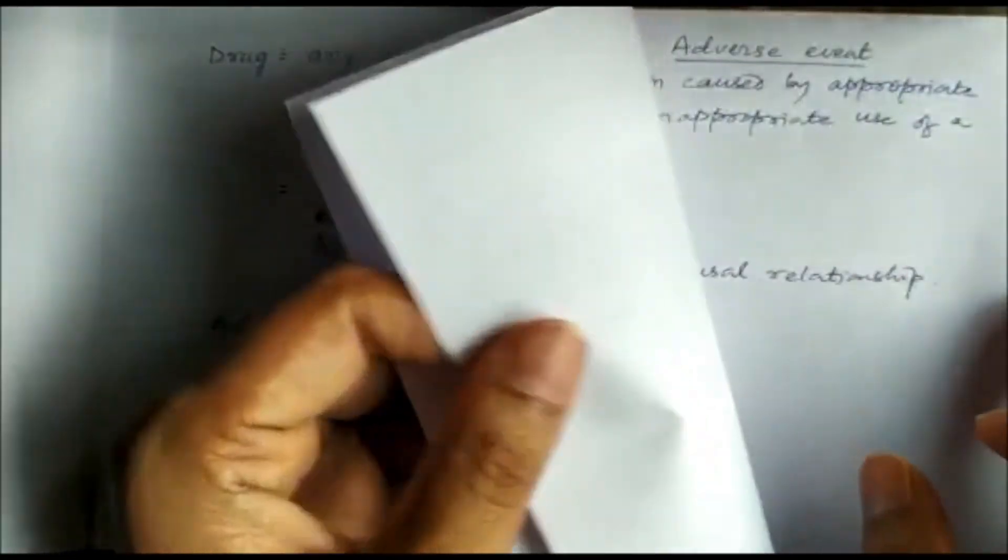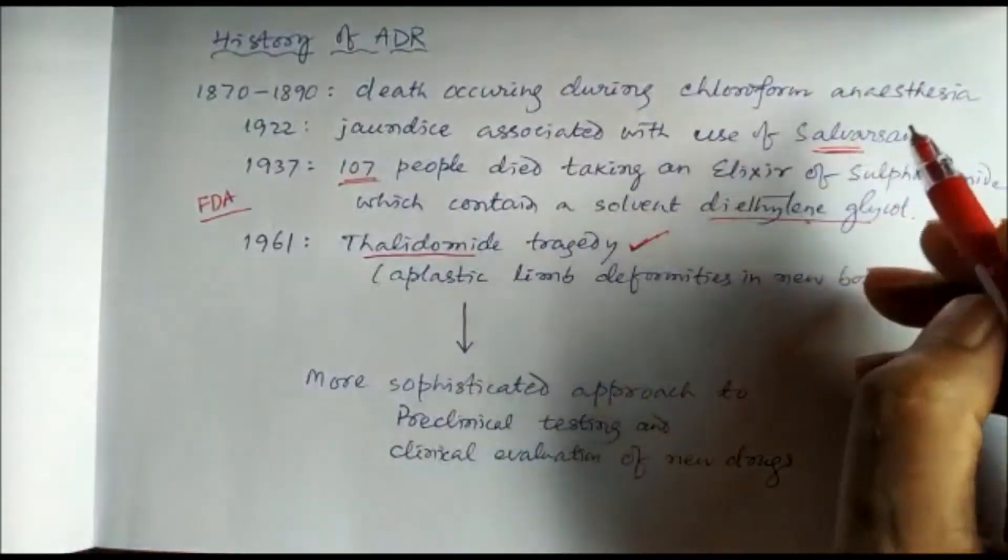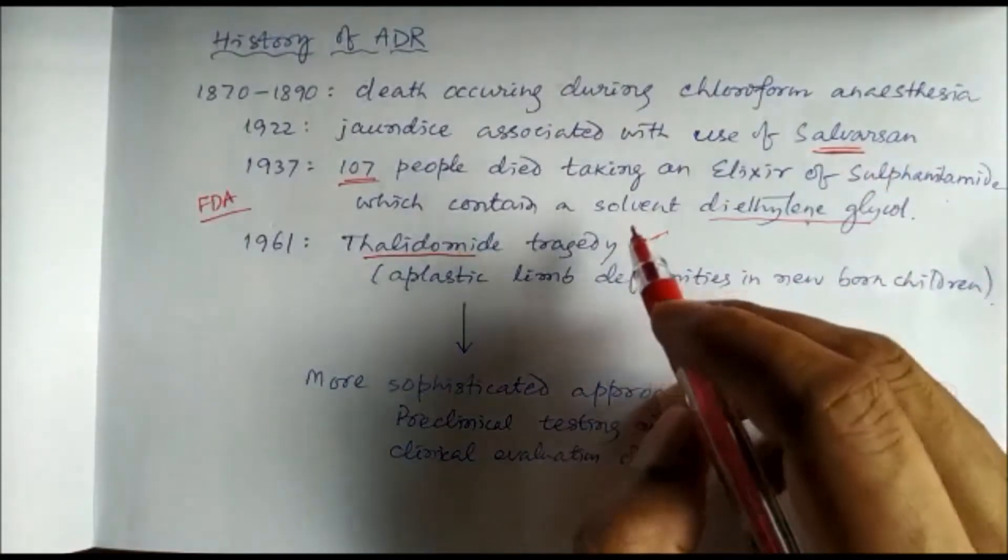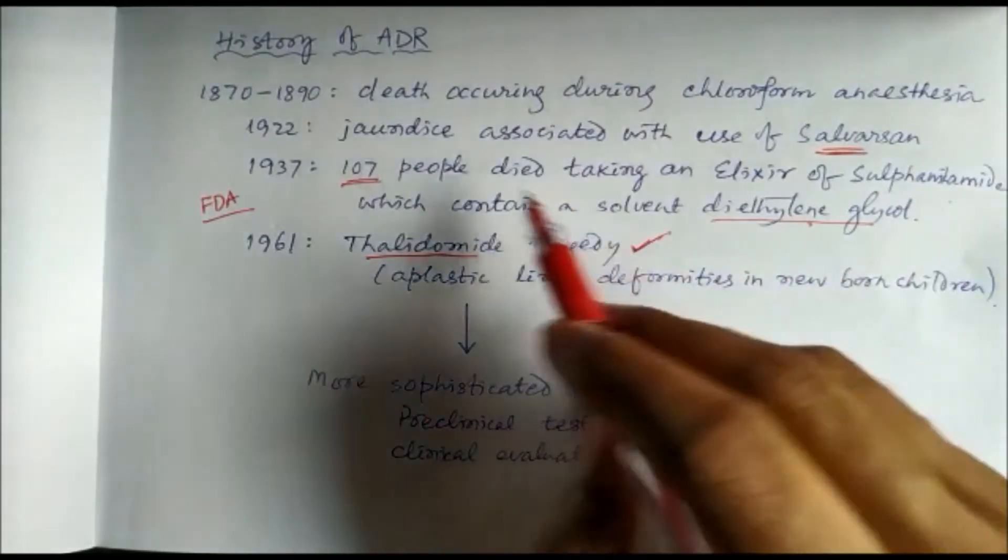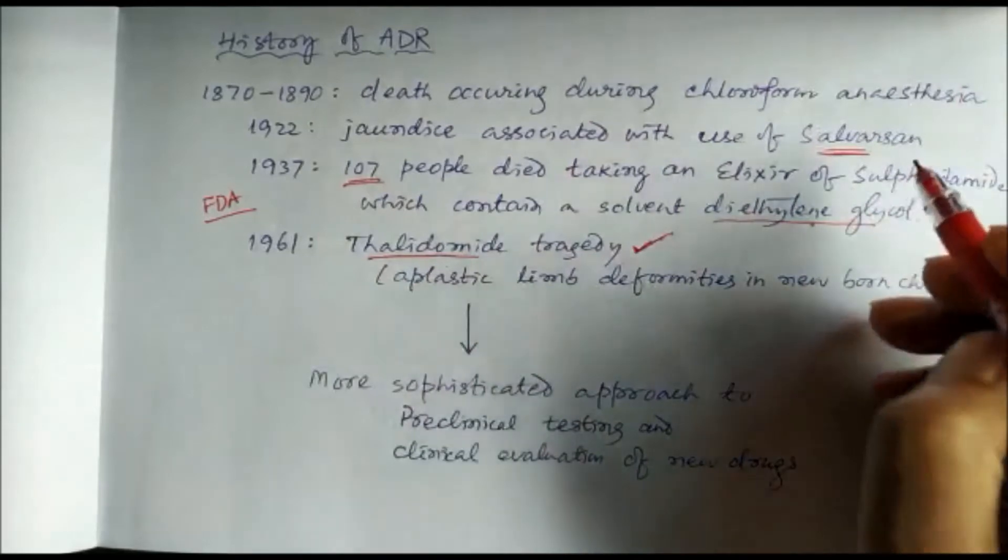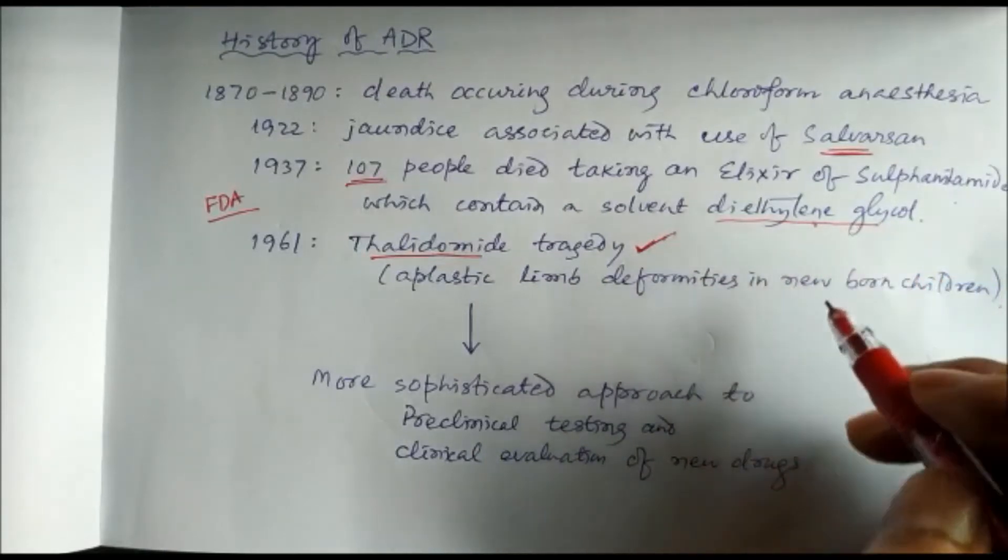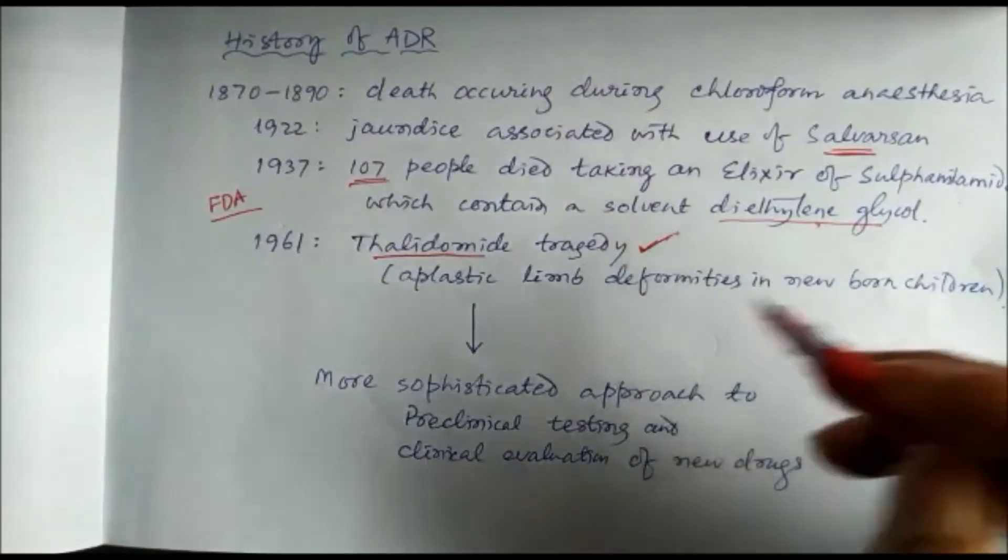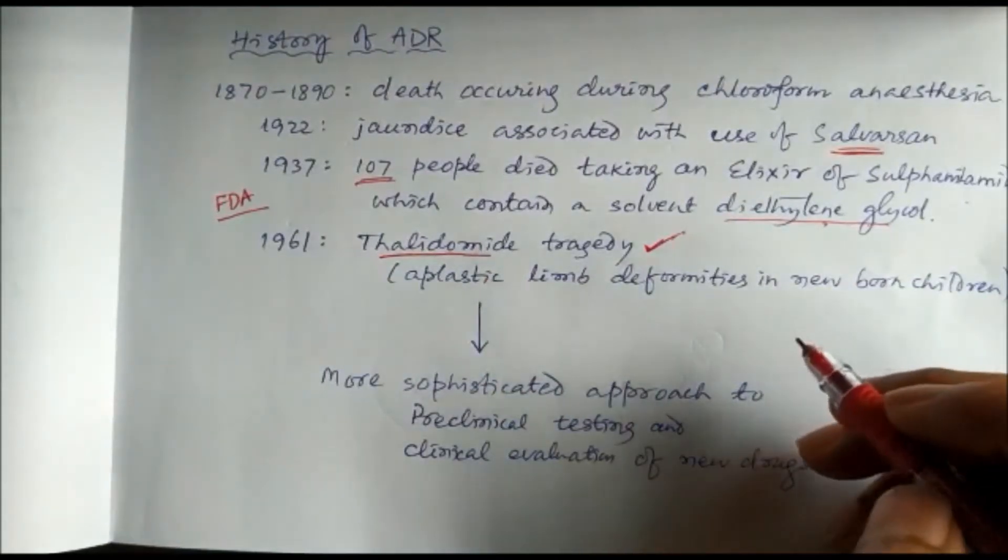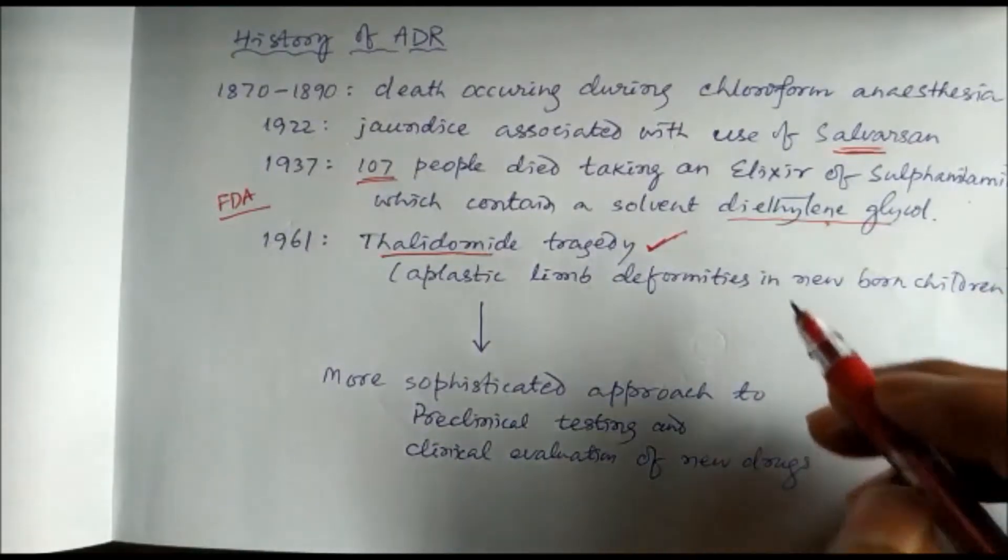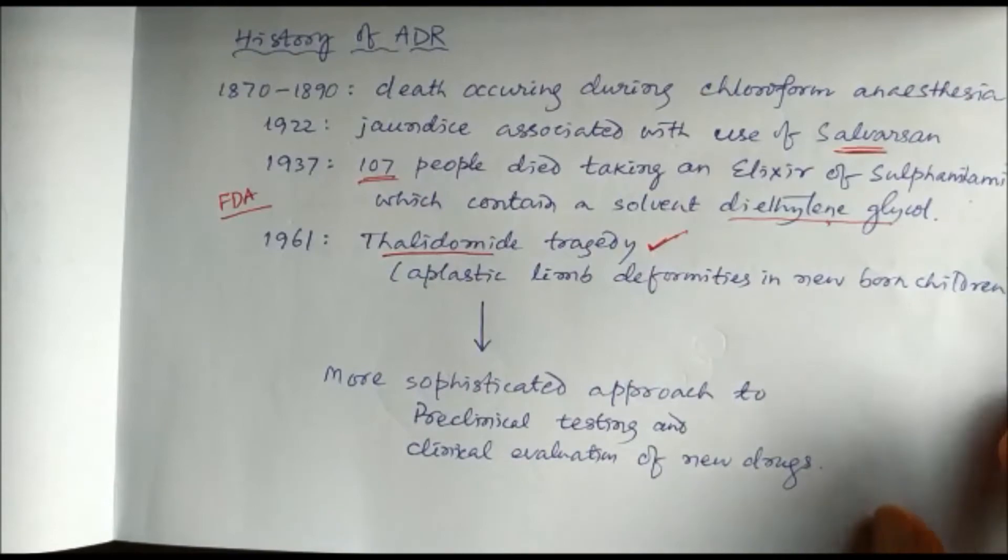If we see the history of adverse drug reactions, there were several reports of chloroform anesthesia leading to death or jaundice associated with arsenic drug salvarsan, which was used against syphilis. There were several deaths, 107 deaths in USA, due to an elixir of sulfanilamide where the manufacturer used the solvent diethylene glycol because they did not know at that time that this was toxic. In 1961, several pregnant women taking thalidomide as a sedative later found that all the babies born were without limbs. All this history led to a more sophisticated approach to preclinical testing and clinical evaluation of new drugs.